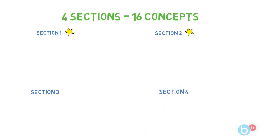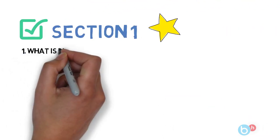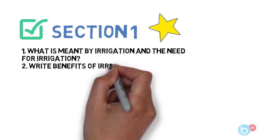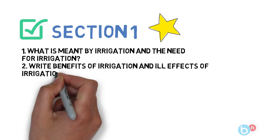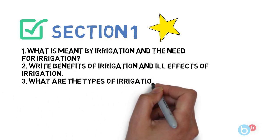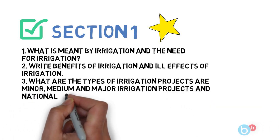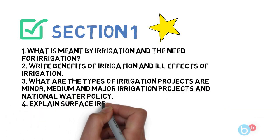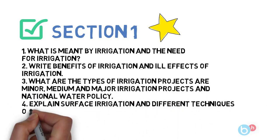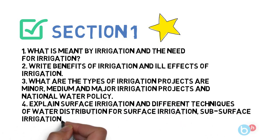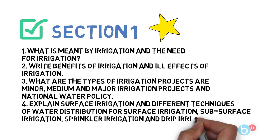So talking about the first section: First question is what is meant by irrigation and need of irrigation. Next is benefits of irrigation and ill effects of irrigation. Next is what are the types of irrigation projects - minor, medium, and major irrigation projects and national water policy. Last one for this section is explain surface irrigation and different techniques of water distribution for surface irrigation, subsurface irrigation, and sprinkler irrigation with drip irrigation.